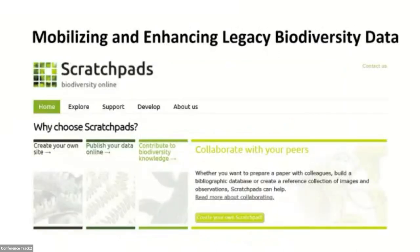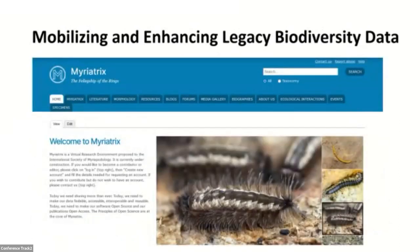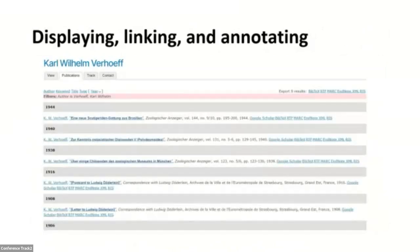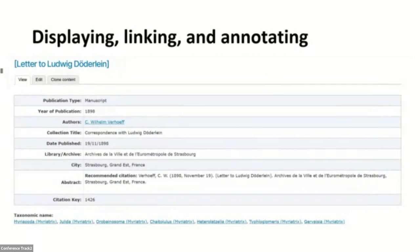We then used the Scratchpad virtual research environment. We used one instance called Miriatrix, dedicated to Myriapoda and Onychophora — so centipedes, millipedes, and velvet worms. We created a biography for Ferhoff, linked it to Wikipedia, and added Ferhoff's publications and also the letters. Each bibliographic reference has a landing page with additional data, and has a feature for tagging documents with taxonomic names, which creates bidirectional links between documents and those names.